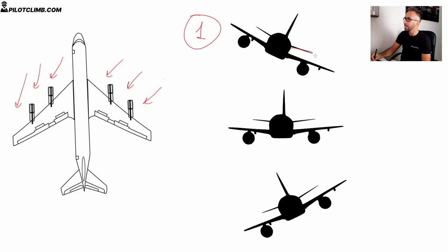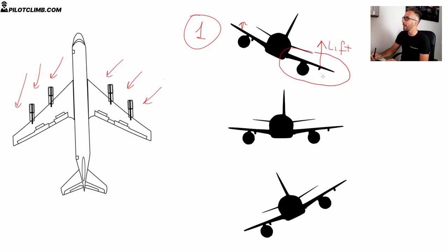But because you're producing more lift, you're also producing more drag. Since more drag is produced, the right wing will slow down compared to the left wing, thus creating a yaw to the right.